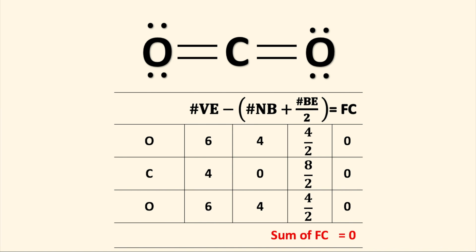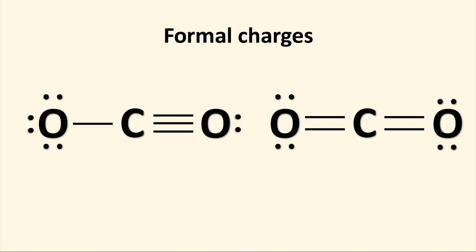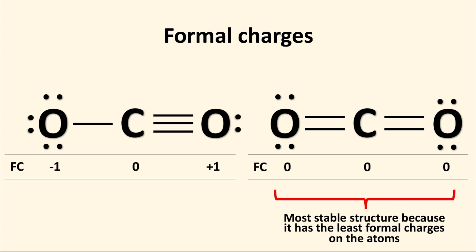Out of the two structures, the second structure where carbon is double bonded to each oxygen atom is the most stable arrangement. Both structures had a sum of formal charges equal to zero, but the first structure had charges on the oxygen atoms, whereas the other structure all these atoms had formal charges equal to zero. The Lewis structure with the least formal charges on the atoms is the most stable structure.